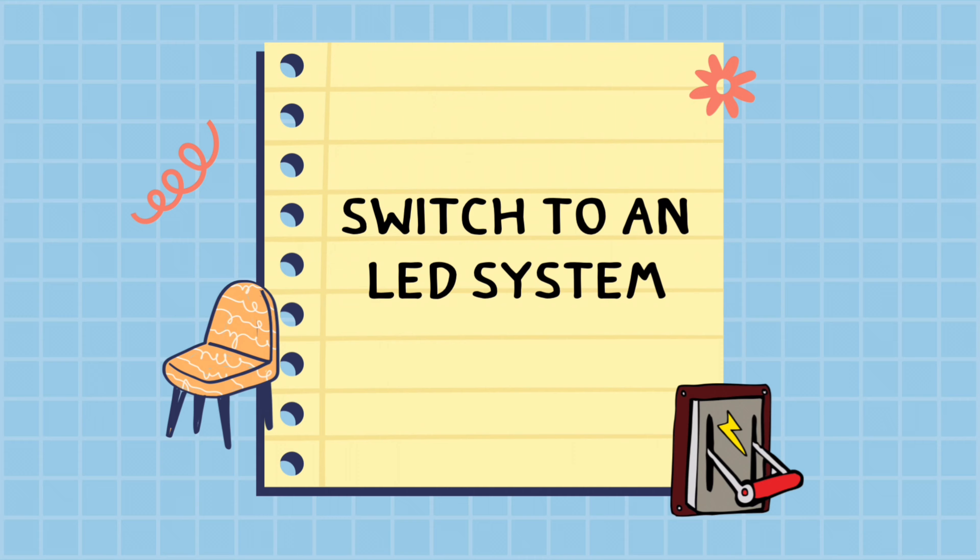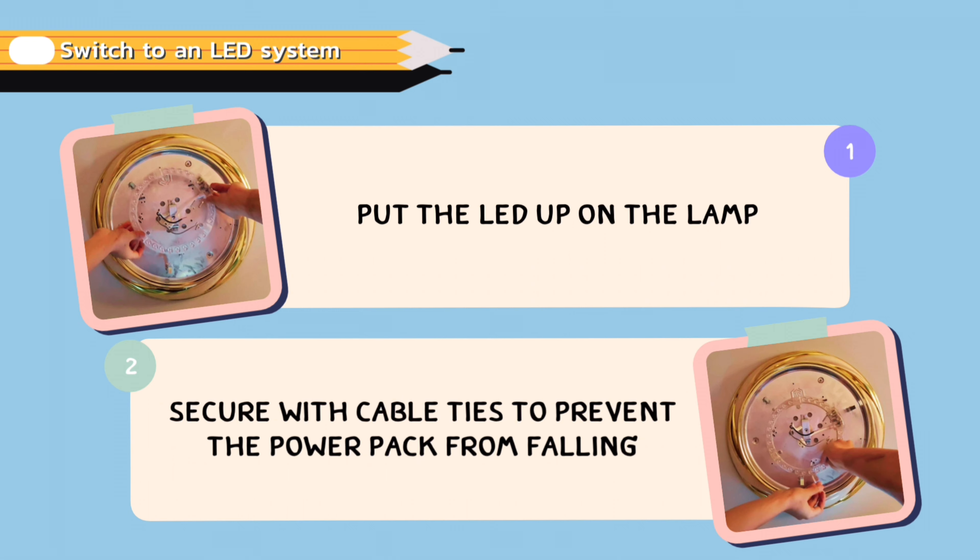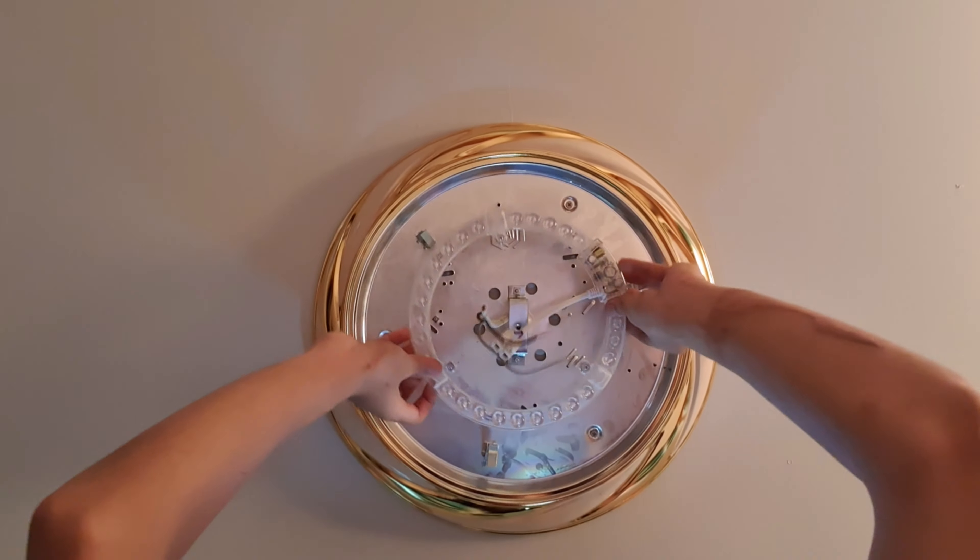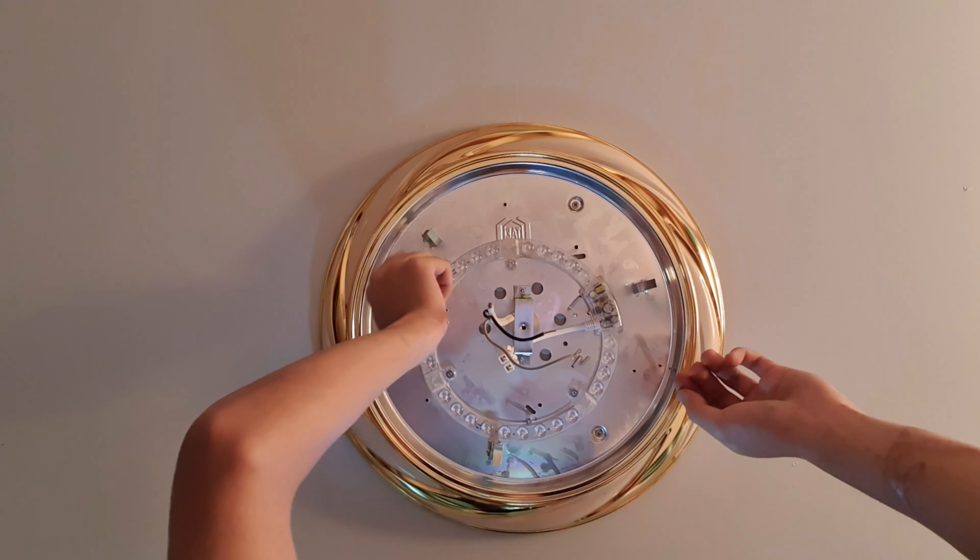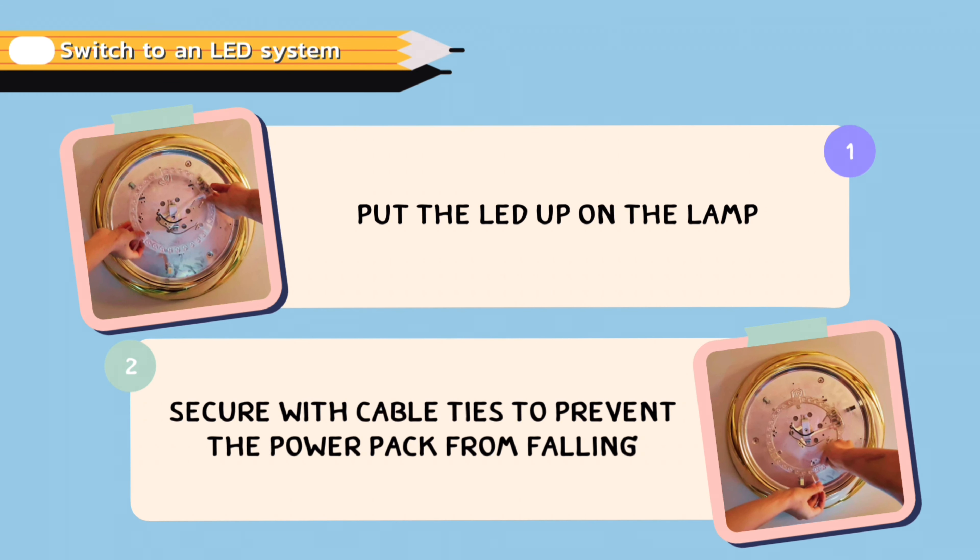Switch to an LED system. Step 1: Put the LED up on the lamp. Step 2: Secure with cable ties to prevent the power pack from falling.